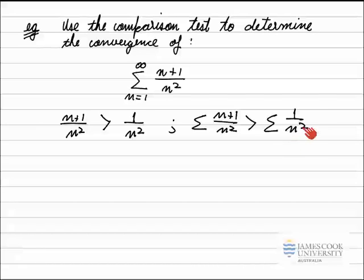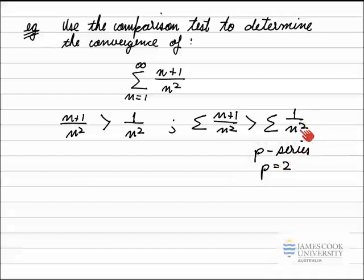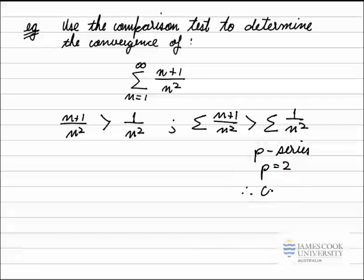Looking at the series I've compared to, 1 over n squared — I recognize that is a p-series where my p-value is equal to 2. The p-value is the power on the bottom. We know that when a p-series has a p-value greater than 1, the series converges. So therefore this series converges.